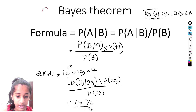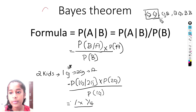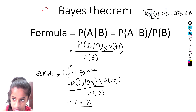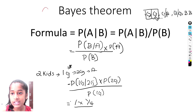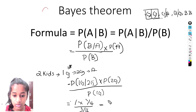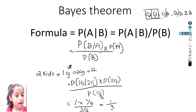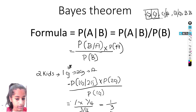Now dividing by the probability of one girl: looking at the outcomes, we have a girl in three out of the four cases — two girls, girl-boy, and boy-girl. So the probability of at least one girl is 3 by 4. Dividing 1 by 4 by 3 by 4 gives us 1 by 3. So given that one kid is a girl, the probability that both kids are girls is 1 by 3.